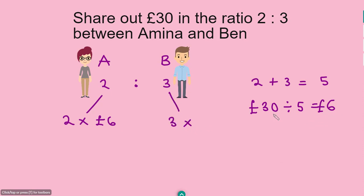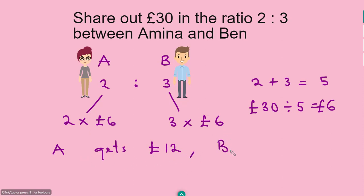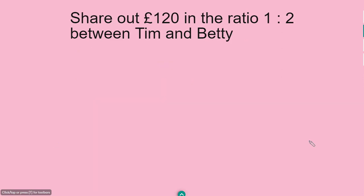That means Amina gets two lots of six pounds, which is 2 times 6 equals 12. So Amina gets 12 pounds, and Ben gets three lots of six pounds, which is 18 pounds.